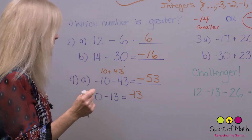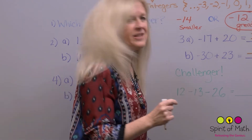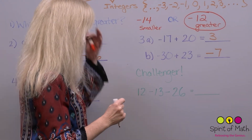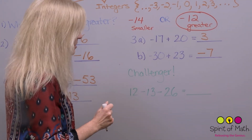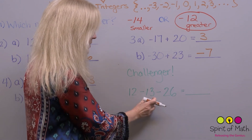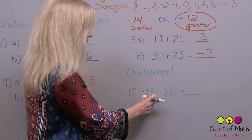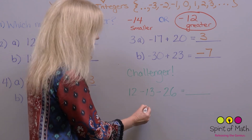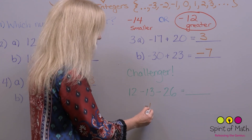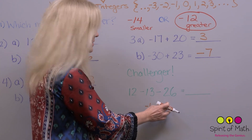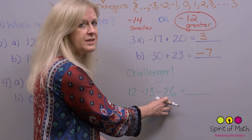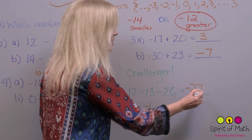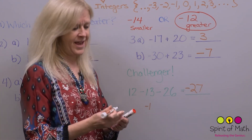Finally, the challenge: put a couple of these together. Start with 12 positives and 13 negatives — there's one more negative, so we're at negative one. Then negative one minus 26: there's a total of 27 negatives, so your answer is negative 27.